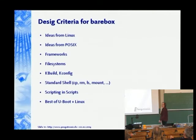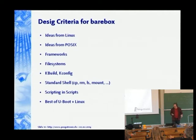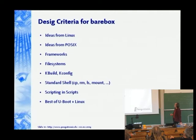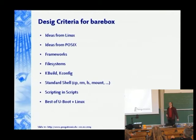Frameworks are quite important in barebox. In Linux 2.4, drivers just implemented interfaces directly. In today's Linux we have frameworks and mid-layers which implement the interface and have an internal API, and that's something we do in barebox now. We also borrowed the kconfig and kbuild frameworks from Linux, which gave us parallel compilation quite easily. We have a standard shell with commands like cp, rm, real scripting — basically the best of U-Boot and Linux mixed together, still without interrupts or parallel execution.